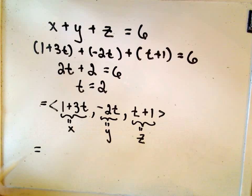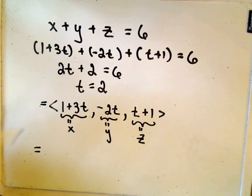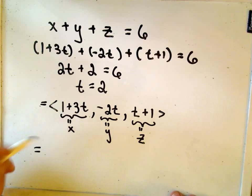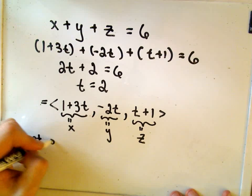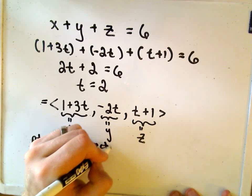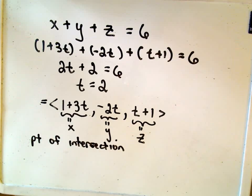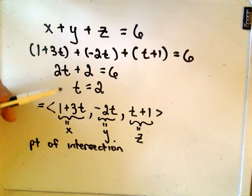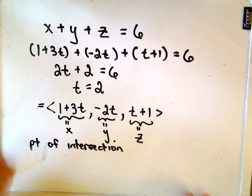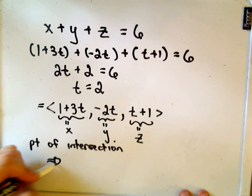And now all we have to do is simply just backtrack and plug these into our parametric equations. And it says the point of intersection, the line is going to hit this plane at the value when t = 2. So if we simply plug that in, that's going to give us the point.